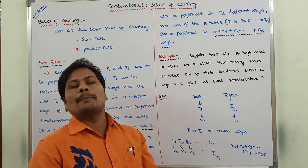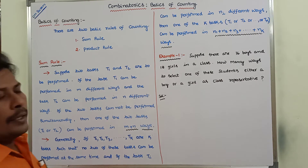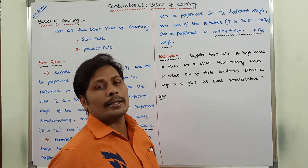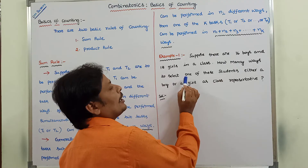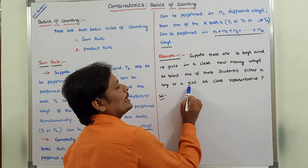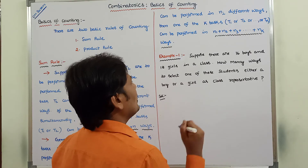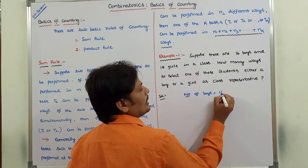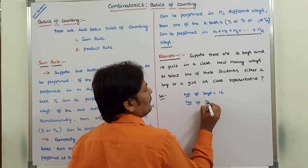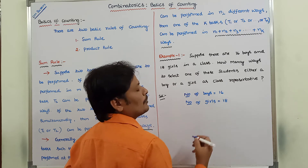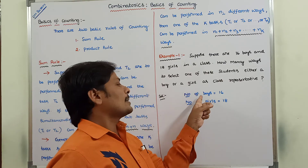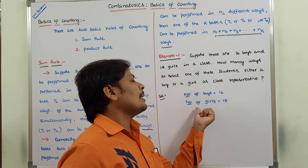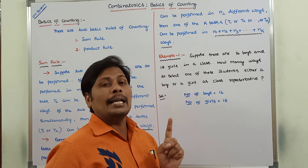Now we can go for some example problems on the sum rule. Example one: suppose there are 16 boys and 18 girls in a class. How many ways can we select one of these students, either a boy or a girl, as a class representative? So the number of boys is equal to 16 and the number of girls in the class is equal to 18.